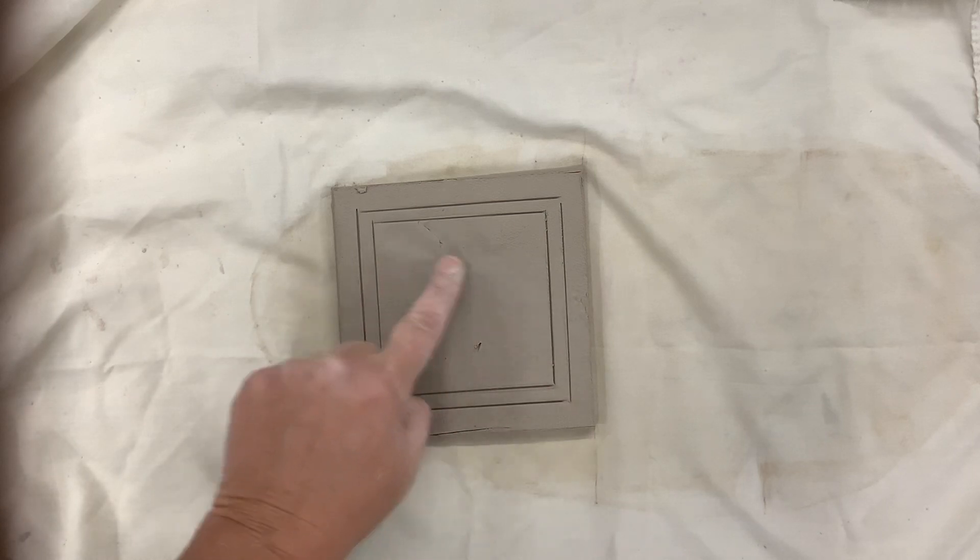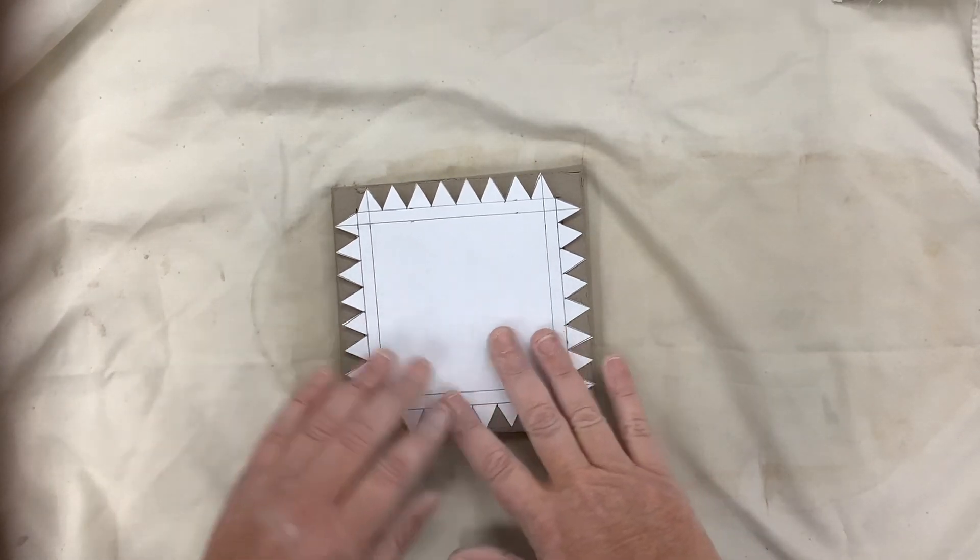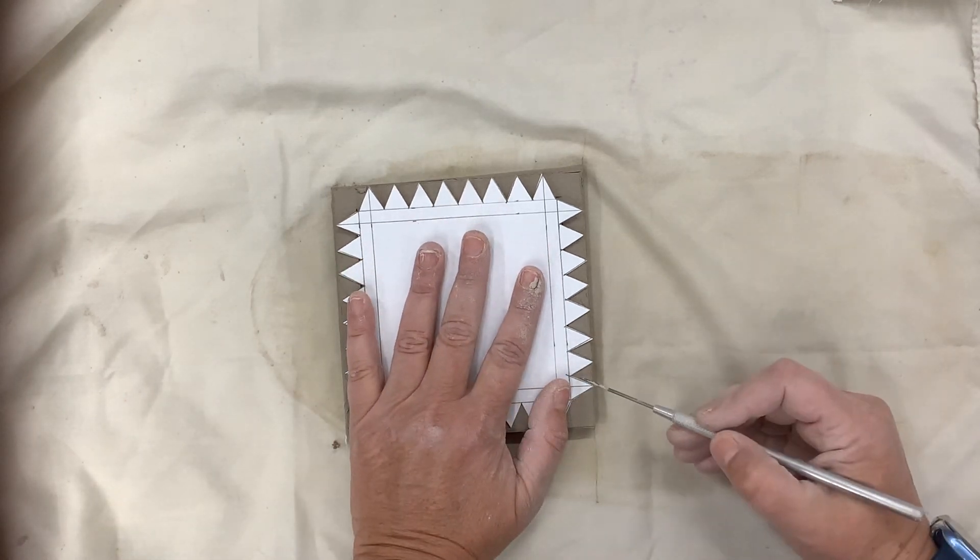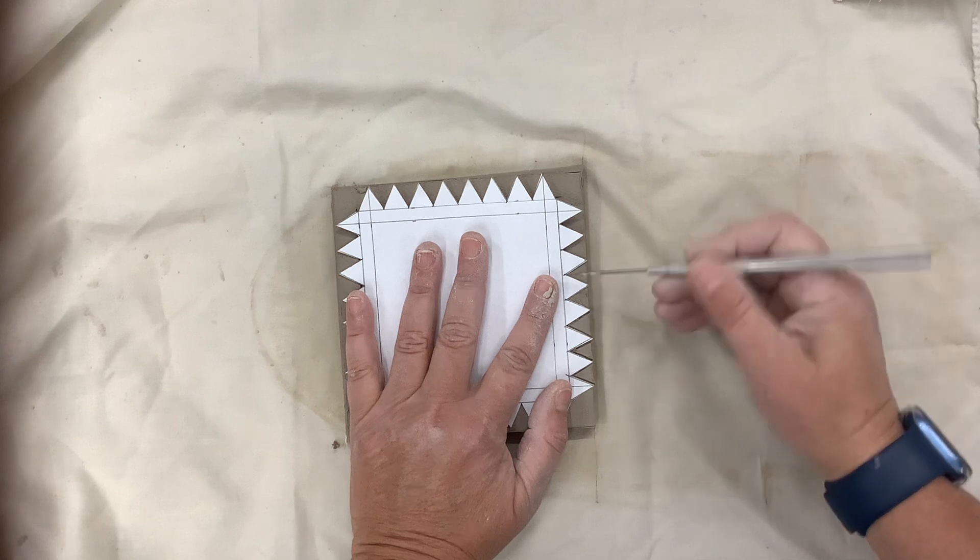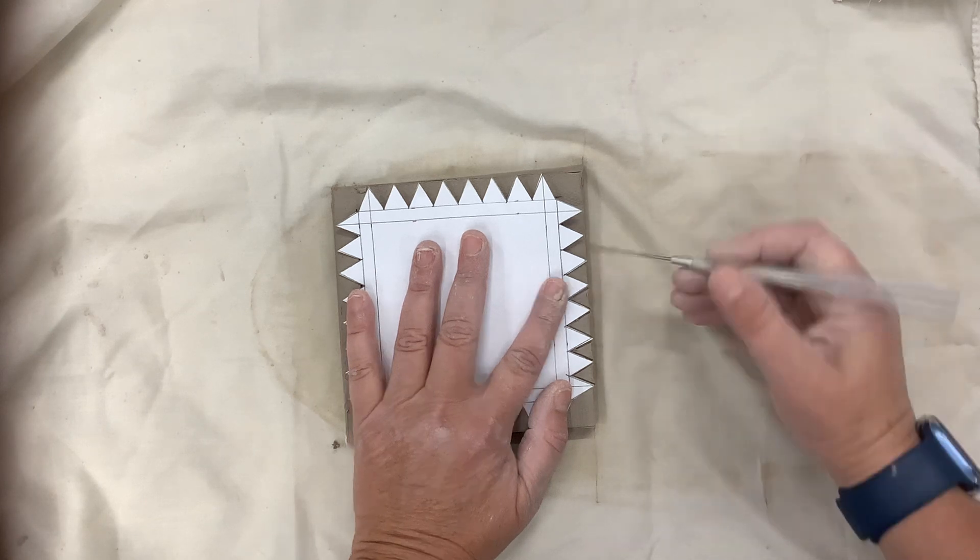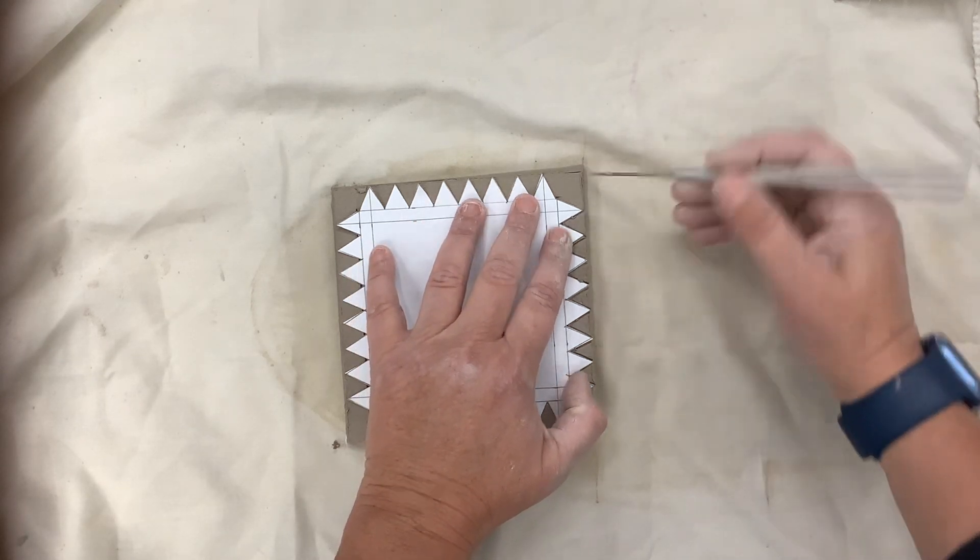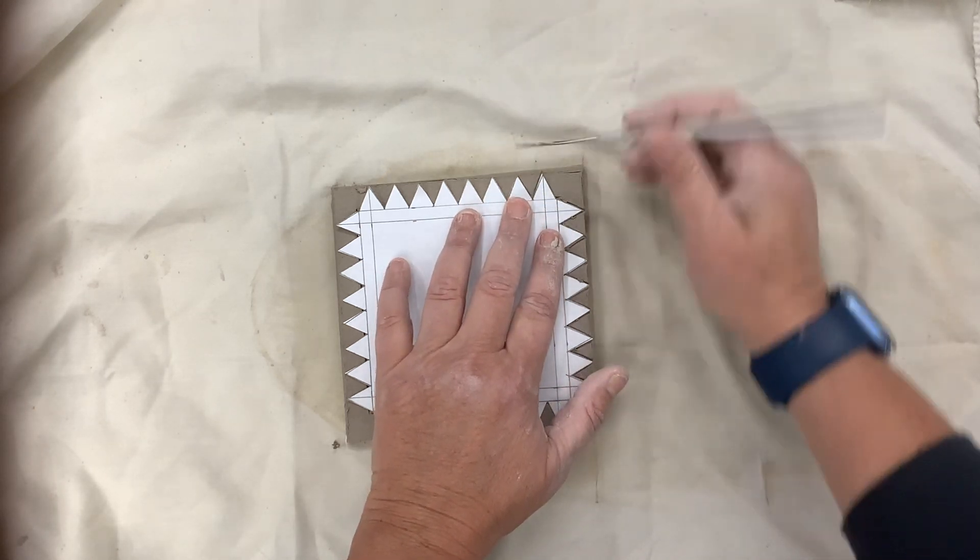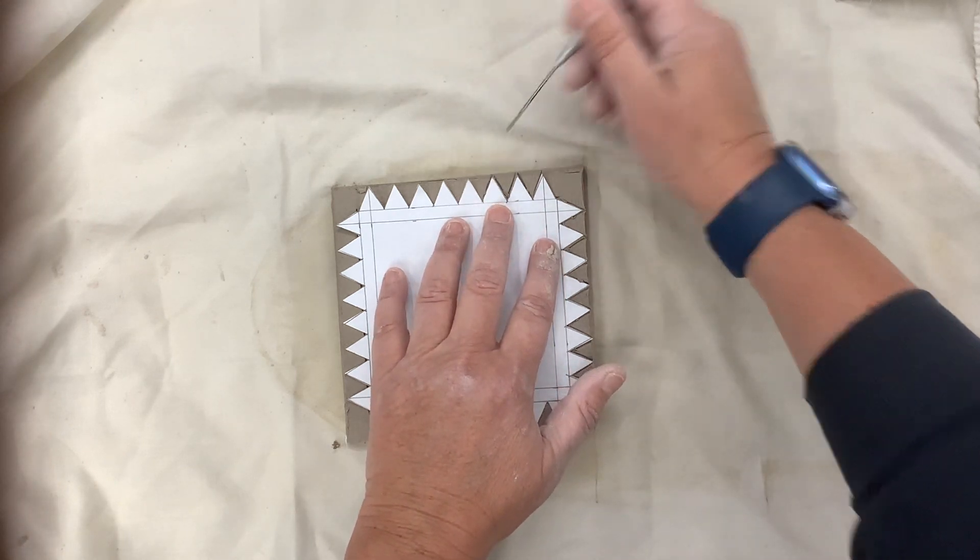My stencil looks like this. I'm going to place this on top and make sure it fits nicely. Then I can go in and outline the design on the outside, going all the way around. Then I'm going to blow dry it because I want this leather hard as I start to make my cuts and start creating my design.